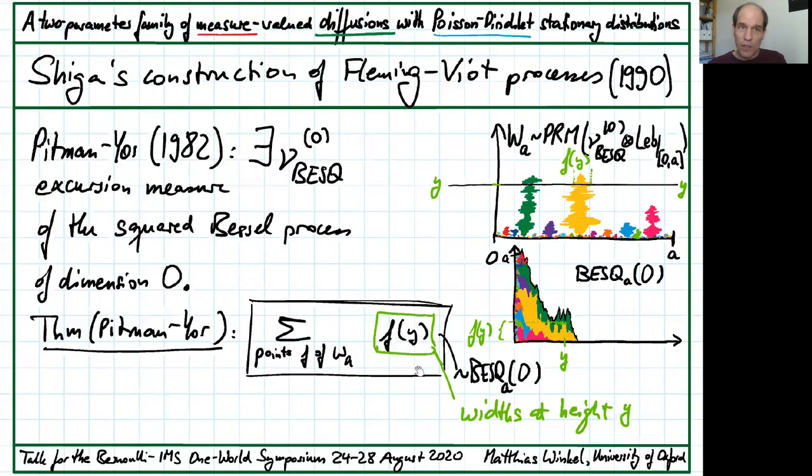The squared Bessel process, the sum, can be better seen in this picture, here with different excursions in different colors, all added up. But for our generalization, it's more useful to depict the Poisson random measure by showing excursions evolving in the vertical direction.